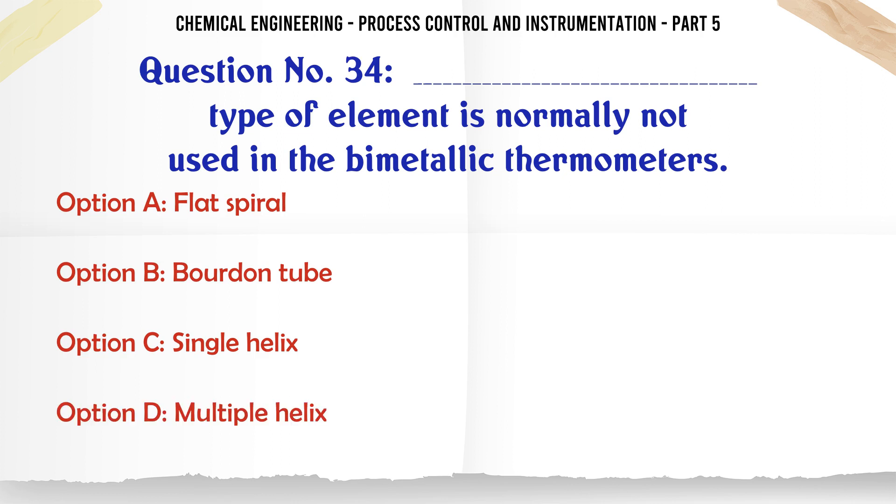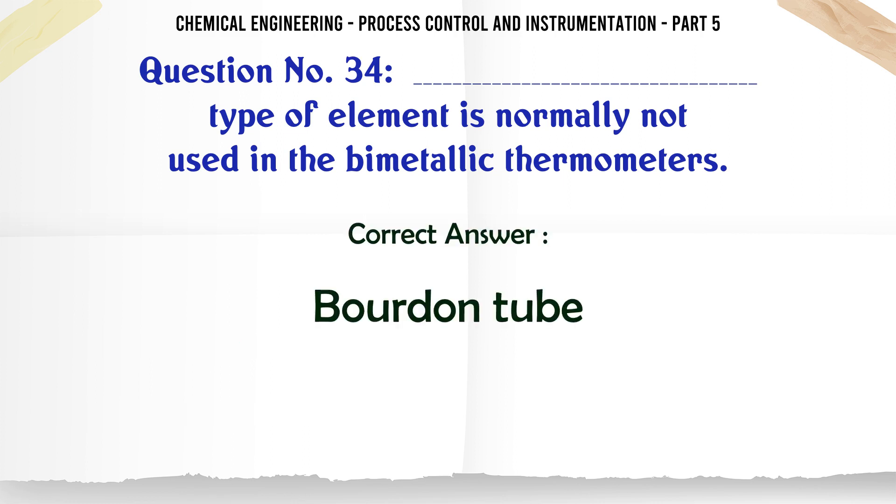Type of element is normally not used in the bimetallic thermometers: A. Flat spiral. B. Bourdon tube. C. Single helix. D. Multiple helix. The correct answer is Bourdon tube.